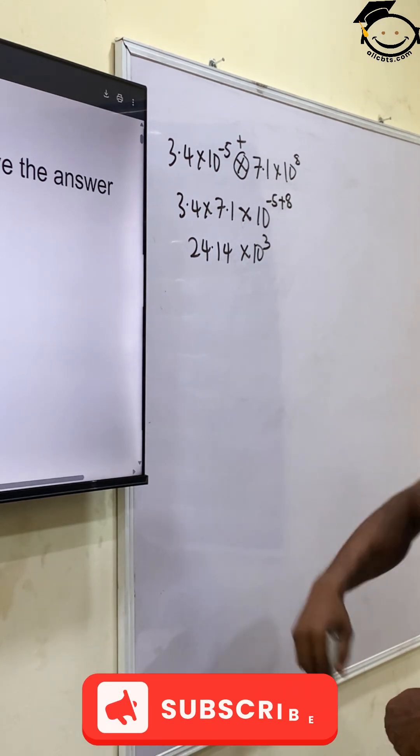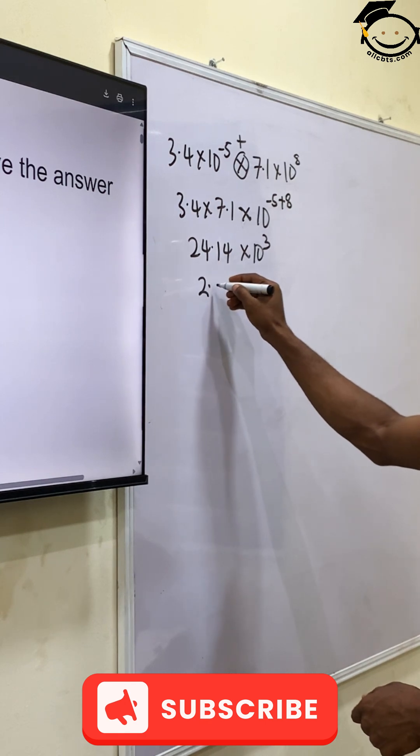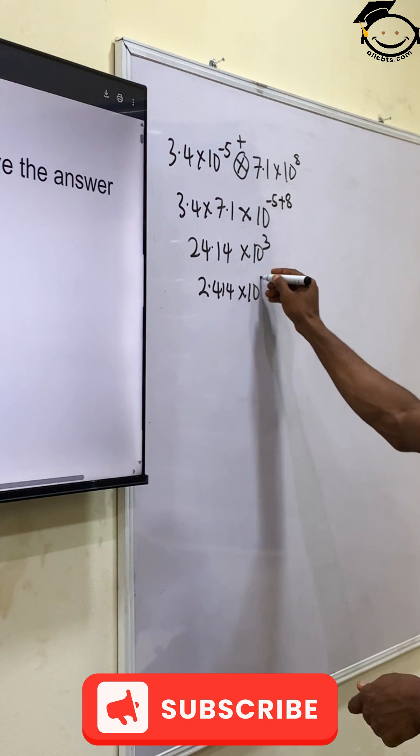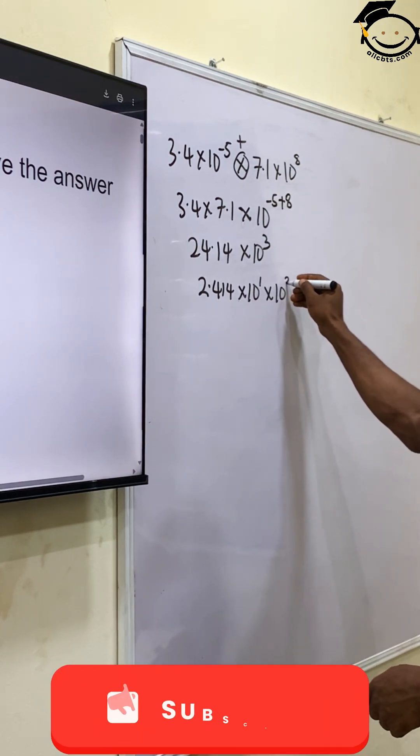Now, since we are leaving our answer in standard form, it becomes 2.414 times 10 raised to the power 1, times 10 raised to the power 3.